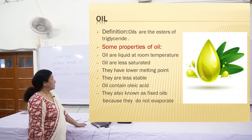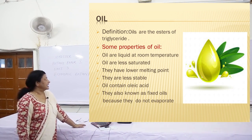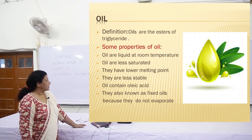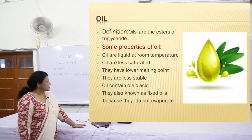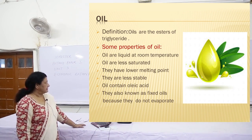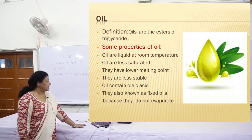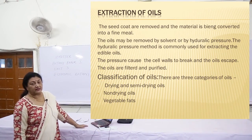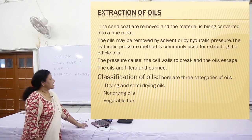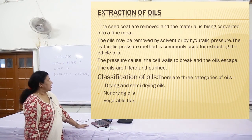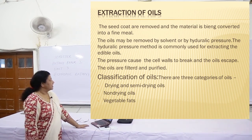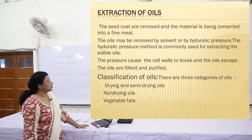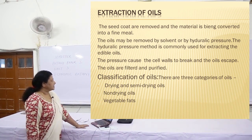Starting with oils and fats, let us know what oils are. Oils are the esters of triglyceride. Some important properties: oils are liquid at room temperature, they are less saturated, have a lower melting point, they are less stable, contain oleic acid, and are also known as mixed oils because they do not evaporate. Oils may be removed from seeds by solvent or by hydraulic pressure. The seed coats are removed and the material is converted into a fine meal. This pressure method is commonly used for extracting edible oils, causing cell walls to break so oils escape. Oils are further filtered and purified.